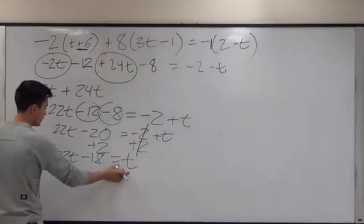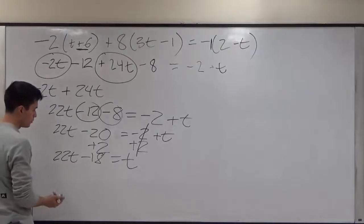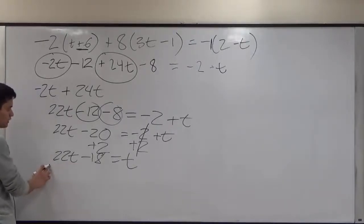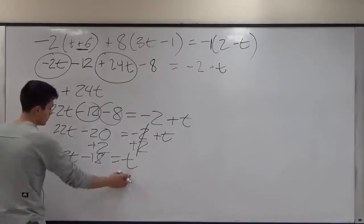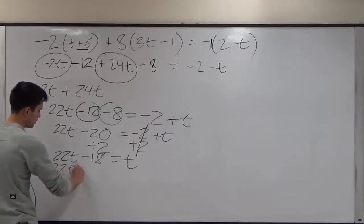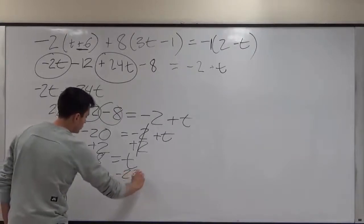Now we have t by itself, but we have one t here. So what we can do is we can subtract 22t and move it over to this side. Because remember, what we do to one side, it has to be done to the other. So minus 22t is equal to minus 22t.